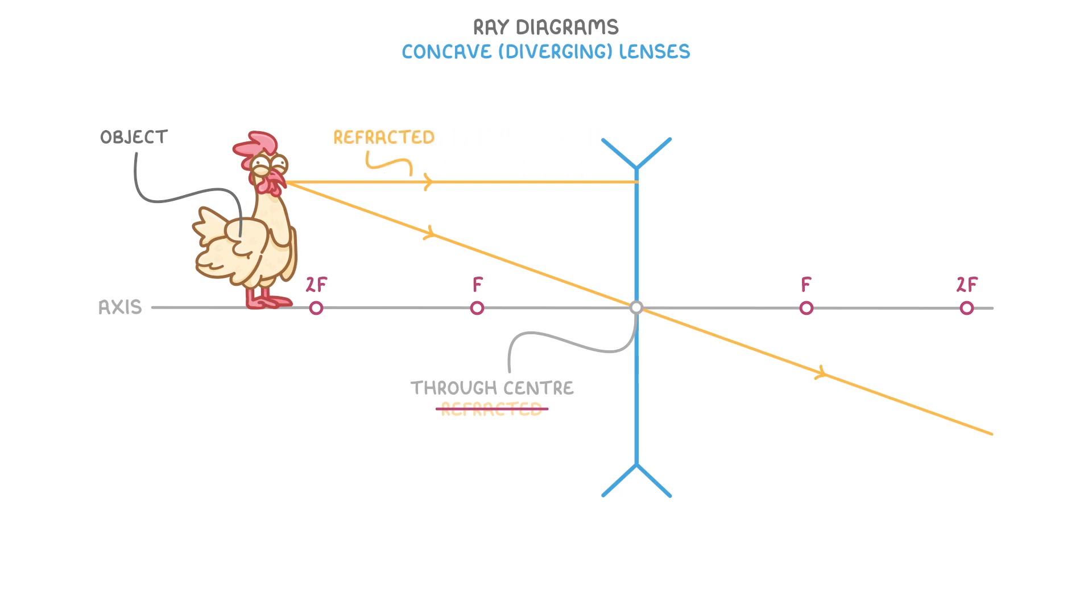This first ray though will be refracted, and to find the angle it will be refracted at, we need to draw a virtual ray between this point, where it hits the lens, and the principal focus, or focal point, which we labelled f earlier.